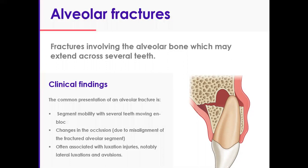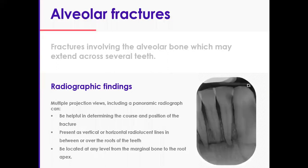Your standard assessment remains the same for all types of dental trauma. Take multiple angle radiographs and an OPG for overall assessment. You can then check the position and course of the fracture — a radiolucent line or lines between or over the roots, which could be vertical or horizontal. These lines could be at any level from the marginal bone to the root apex to be classed as an alveolar fracture. Anything beyond this is a MaxFax job.